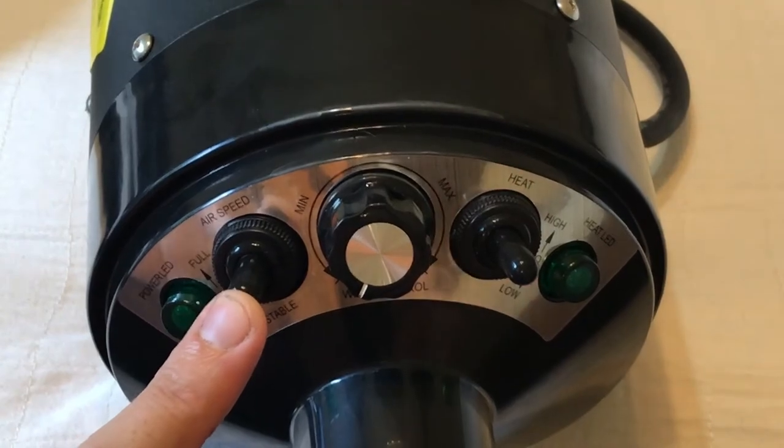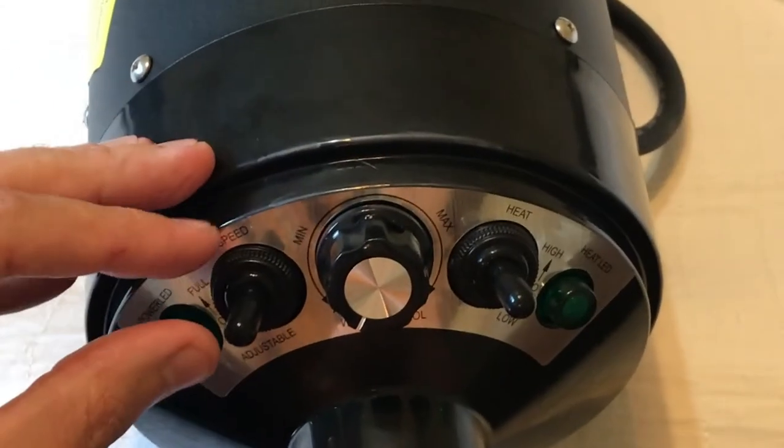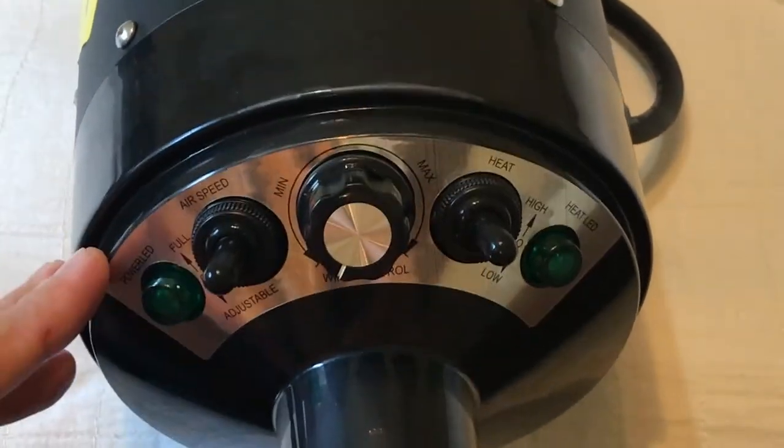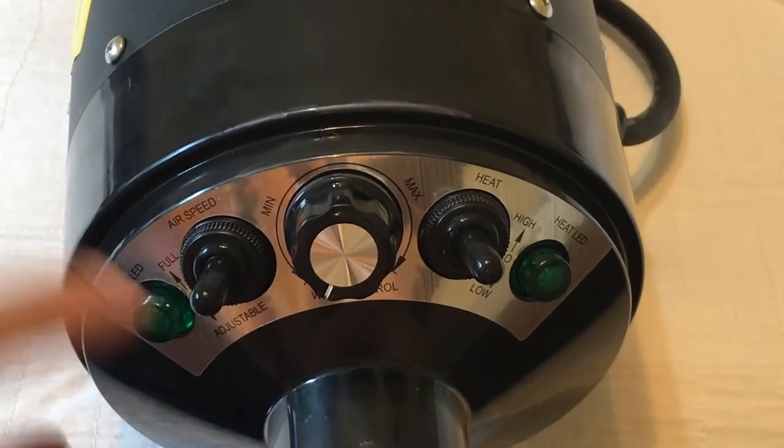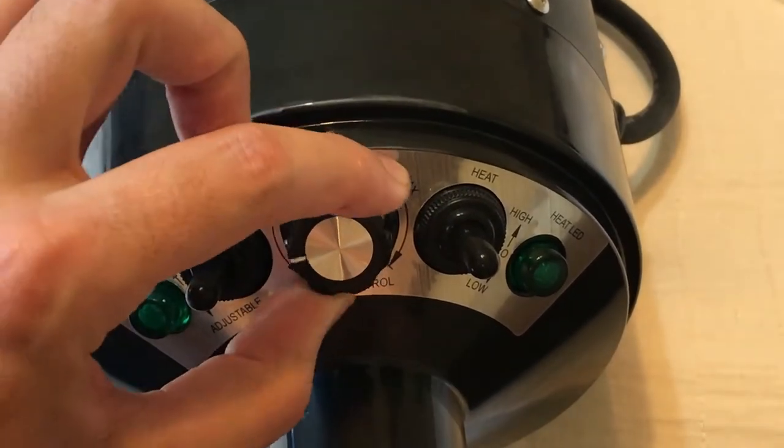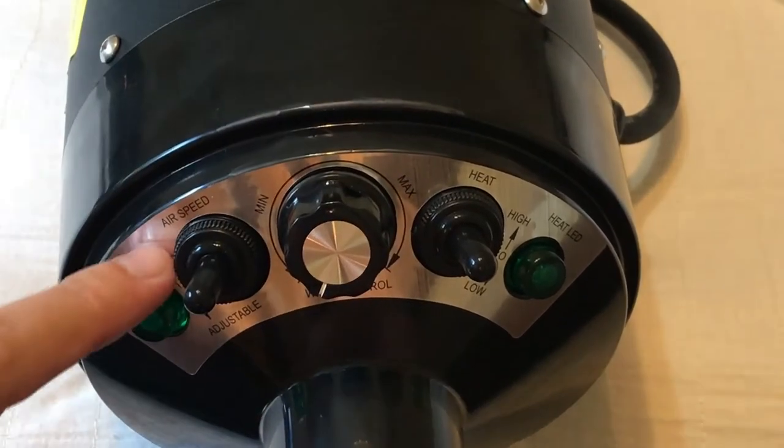The other knob is going to be your airspeed. So you've got a full airspeed, which full airspeed is very high. I'll say that. Full airspeed basically means it's on full blast. This control here in the middle where you can adjust your airspeed doesn't work when it's on full. So if you've got the device on full, it's going to be full no matter what.